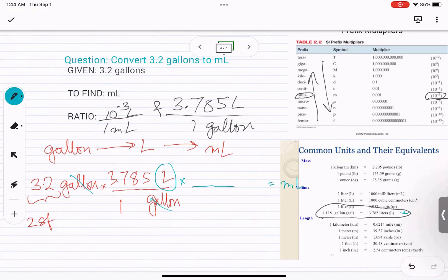So if you go ahead and put 10 raised to negative 3 liter is 1 milliliter. So we are using this relationship now.